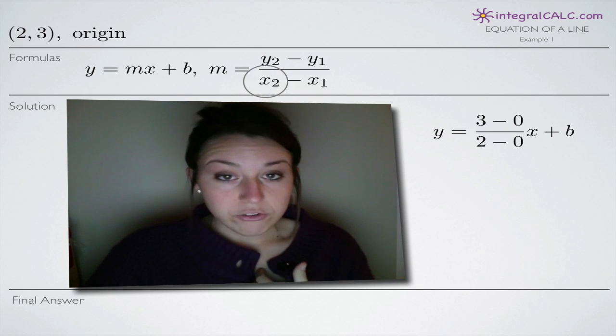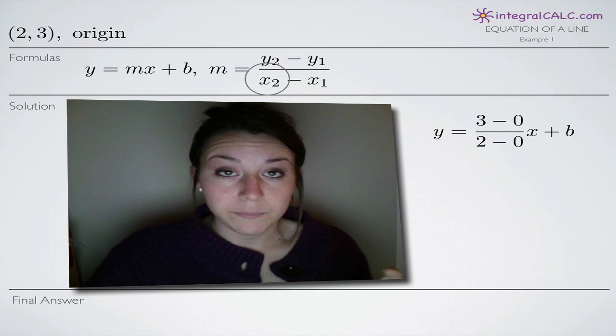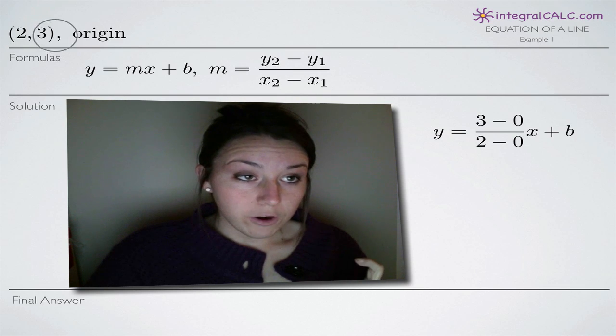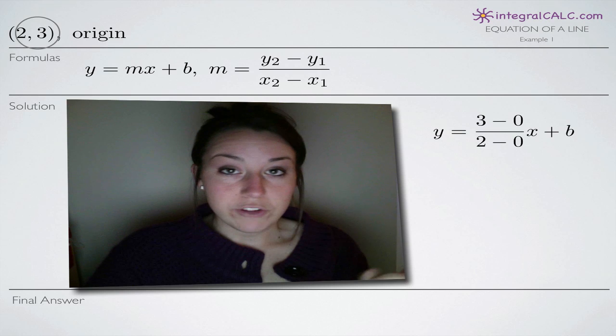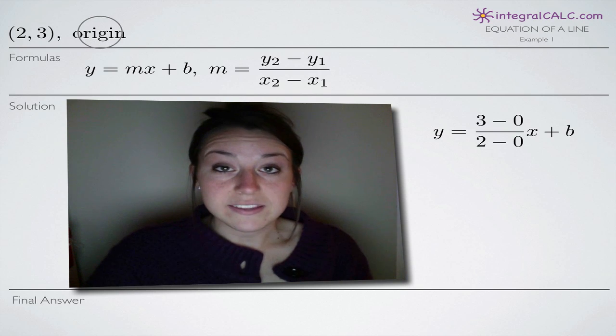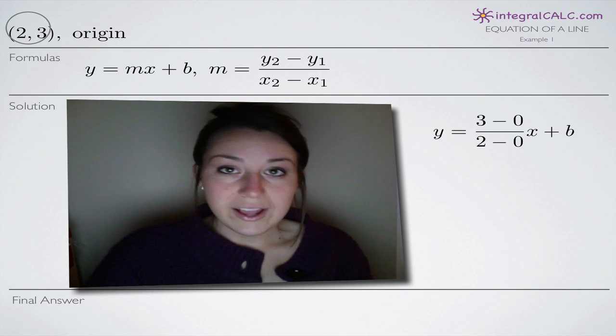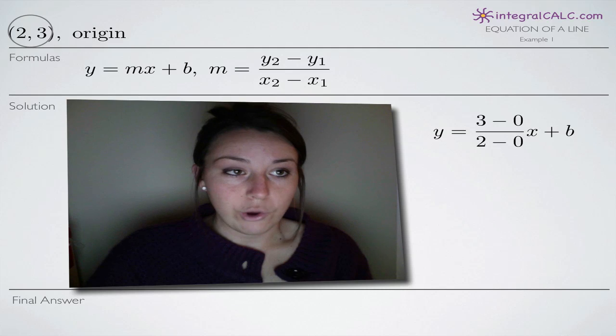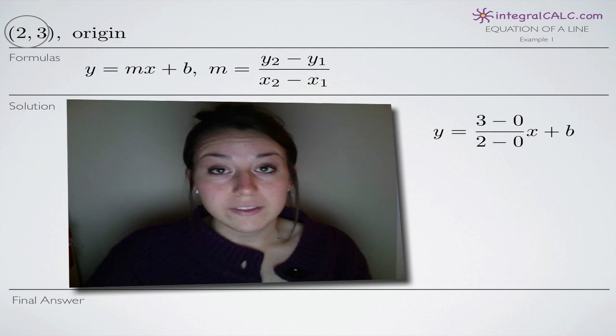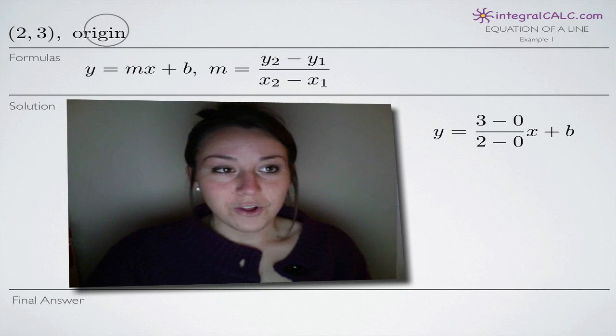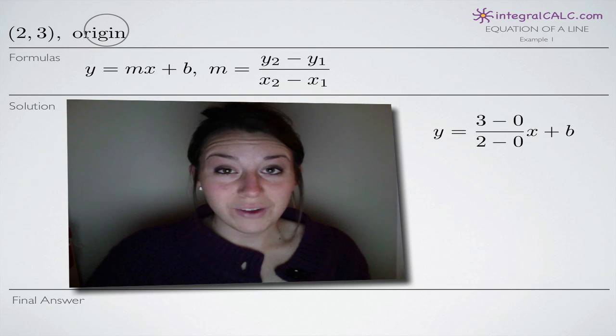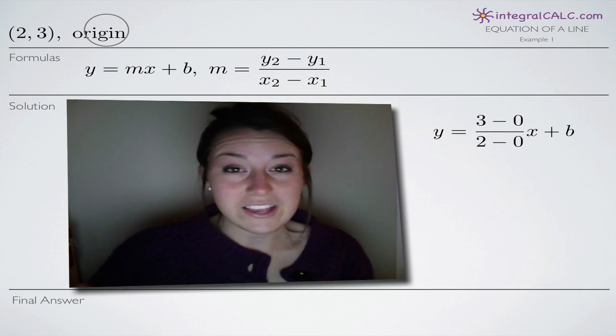I usually find it easier to assign the point x sub 2, y sub 2 to whichever of our points has larger values. In this case, our first point is (2,3) and the second point is (0,0). So (2,3) has larger values, so I would assign that to be x sub 2, y sub 2 because we're going to be subtracting the smaller point from the larger point, and we'll end up with positive values which is easier to work with.